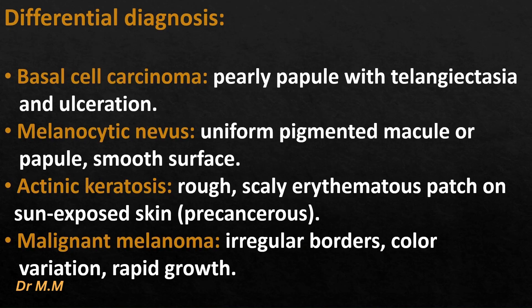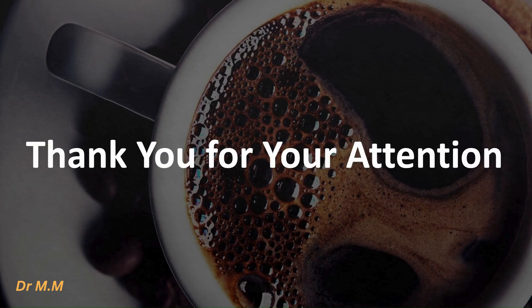Differential diagnosis for the clinical case: basal cell carcinoma presents as a pearly papule with telangiectasia and ulceration; melanocytic nevus as a uniformly pigmented macular or papular lesion with a smooth surface; actinic keratosis as a rough, scaly, erythematous patch on sun-exposed skin, usually precancerous; malignant melanoma with irregular borders, color variation, and rapid growth. This was an explanation about seborrheic keratosis. Thank you for your attention.